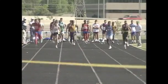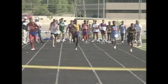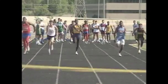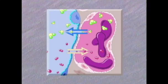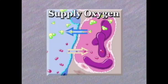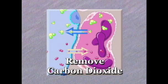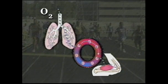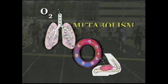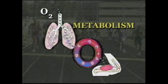Respiration is the exchange of gases between an organism and its environment. Our respiratory system is designed to supply cells of the body with oxygen and remove carbon dioxide. Oxygen is needed by cells of the body for the burning of food material to produce energy. We know this process as metabolism.